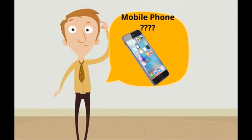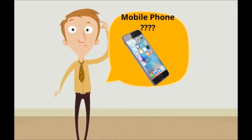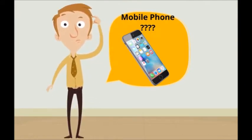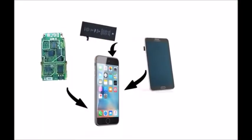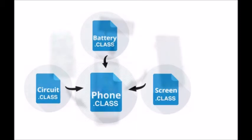Let's assume that there is a mobile phone manufacturer and he needs to manufacture a mobile phone. For manufacturing a mobile phone, he needs some components — he needs a circuit, he needs a screen, a speaker, a mic, and several other components. And these components are dependencies of the mobile phone.